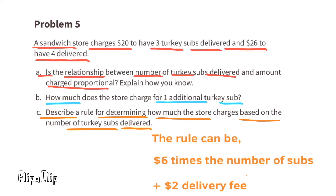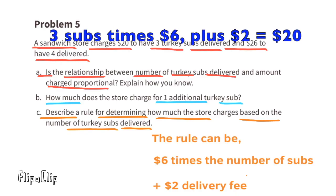Let's test the rule. Three subs times $6 equals $18, plus a $2 delivery fee equals $20 — correct for three turkey subs. Four subs times $6 equals $24, plus a $2 delivery fee equals $26 — correct for four turkey subs.